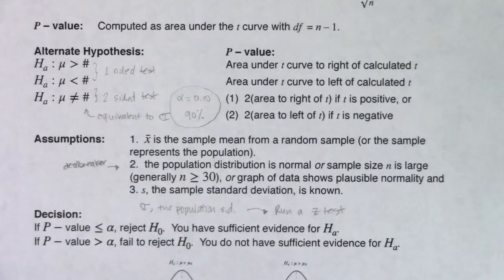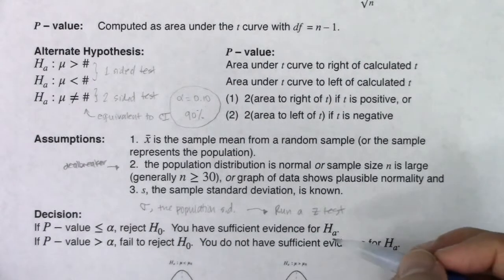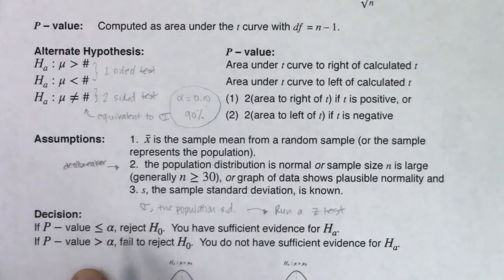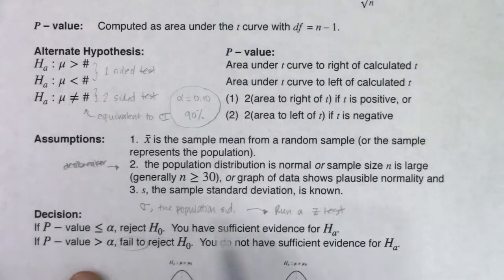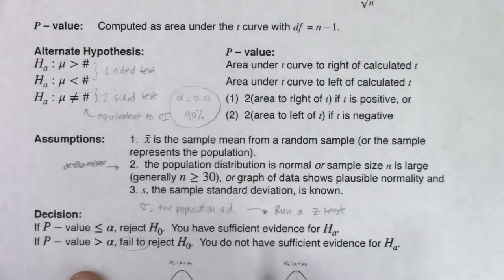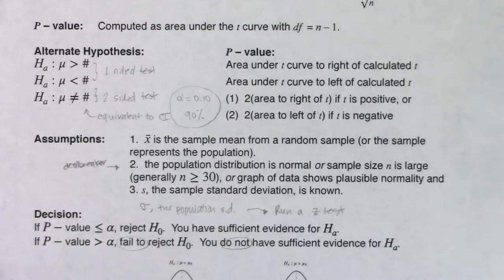I want you to take a look at the similarities in these write-ups. When your p-value is less than alpha, you reject H-naught. If it's greater than, you only add two more words: 'fail to.' These first sentences are pretty similar. And the second sentence — you have sufficient evidence for the alternate — becomes 'you do not have sufficient evidence for the alternate' with two extra words added.